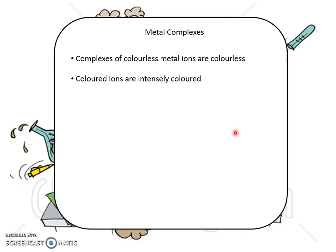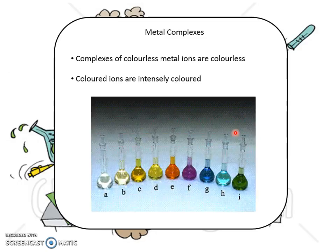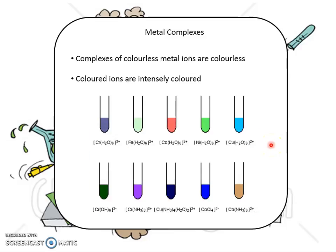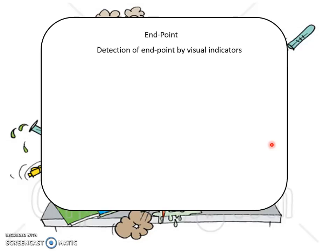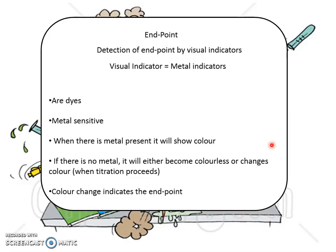Metal complexes can be colourless or intensely coloured. These metals are as follows. To know when you have reached the end point, detection of the end point can be done using visual indicators — in this case, metal indicators. Metal indicators are dyes that are metal-sensitive; they show a colour when a certain metal is present. If there is no metal, the indicator becomes colourless or changes colour, and any colour change indicates the end point.